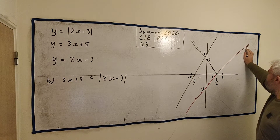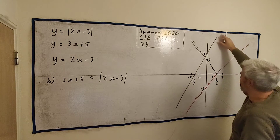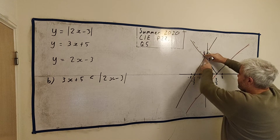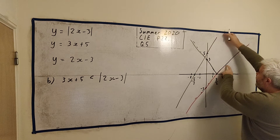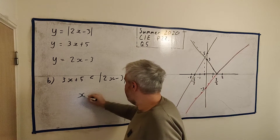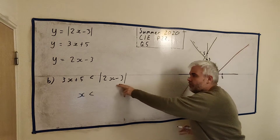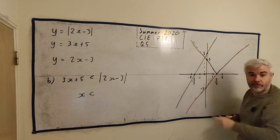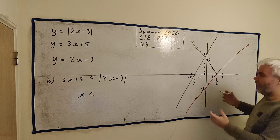By looking at when this line is less than the other one on the y-axis — that's what we've graphed — we can see that this line is less than the absolute value line up to a certain intersection point, and then beyond that point it becomes greater. So the answer to this question is simply x is less than this intersection point. We've solved this question if we know what this point is, so I'm just going to find this intersection point, which is quite easy — finding the point of intersection of two lines.